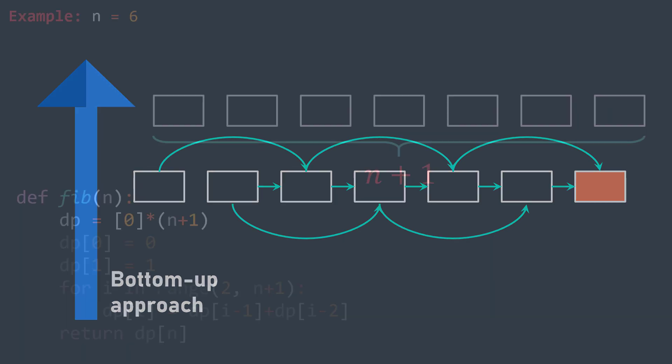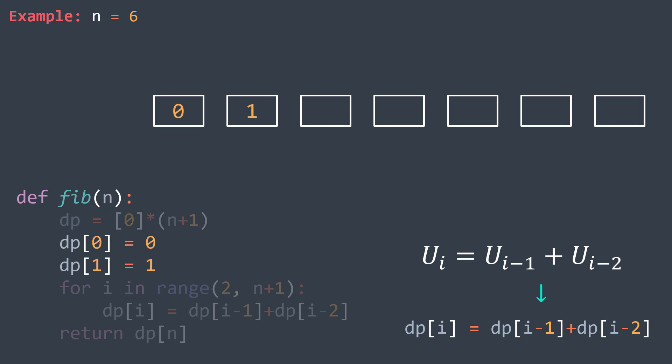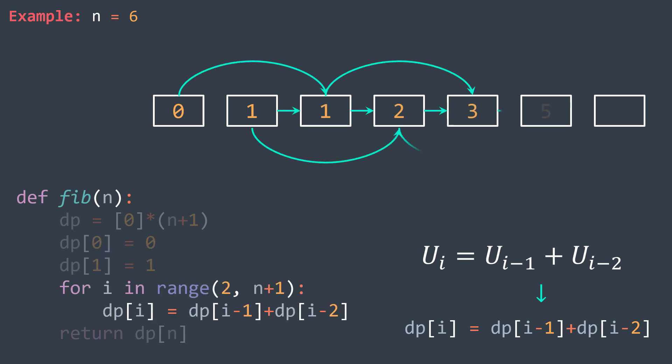In our example, we use an array dp of n+1 elements, where dp[i] represents the i-th term of the Fibonacci sequence. We are searching for the term n, so the final result will be in the last cell. We start with the smallest subproblems — fib(0) and fib(1) — whose values are 0 and 1 respectively, so we set dp[0] = 0 and dp[1] = 1. For each remaining index i, we compute dp[i] = dp[i-1] + dp[i-2], since dp[i] represents fib(i) and fib(i) = fib(i-1) + fib(i-2).